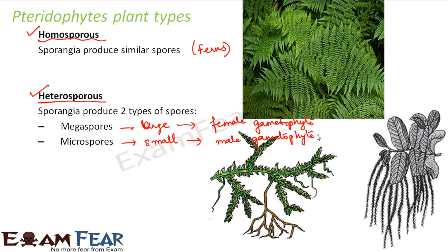Examples of heterosporous plants are Selaginella and Salvinia. Comparing ferns with Selaginella, ferns have bigger leaves while Selaginella has very small leaves. Selaginella and Salvinia produce two varieties of spores — one bigger and one smaller. On the basis of the type of spores produced, pteridophytes are classified into homosporous and heterosporous plants.